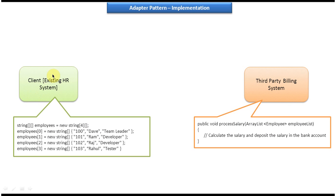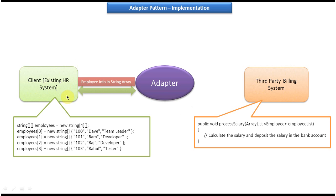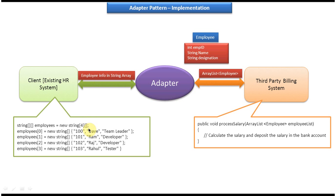The problem is that the existing HR system doesn't want to change its code, and the third-party billing system also doesn't want to change its code. So how can we make these incompatible systems work together? The only solution is an adapter. We have to introduce an adapter in between the existing HR system and the third-party billing system. The HR system makes a call to the adapter passing employee information as a string array, and the adapter converts it to an ArrayList and passes it to the process salary method.